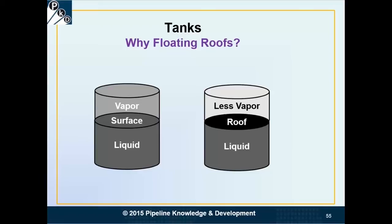On the right-hand side I have a similar drawing but with a roof on it — it says 'less vapor.' Whenever we're filling this tank there's less vapor to be displaced as the liquid comes up. If you imagine this roof floating up and down, we don't want the roof to sink all the way to the bottom, because we'd have problems getting it filled again. So the roof is on legs that keep it from going all the way down to the bottom.